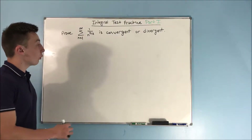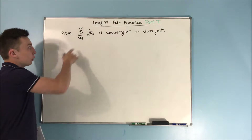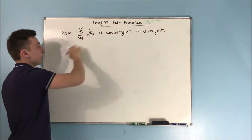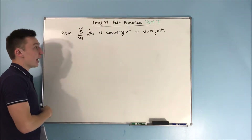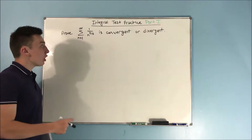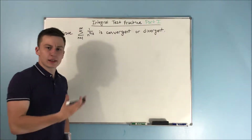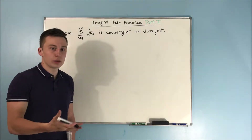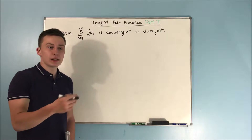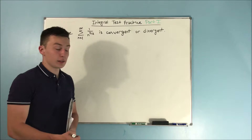This video is going to be part one of our integral test practice. We want to prove that the series — the sum from n equals one to infinity of one over n to the three halves — is convergent or divergent. We can already tell by looking at this that it's going to be convergent. This is a p-series and p is greater than one. But the whole idea of a p-series comes from the integral test, so we're actually going to do this with the integral test.